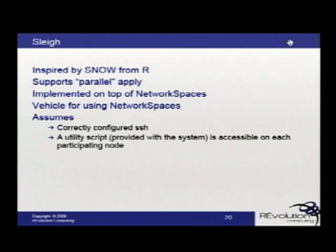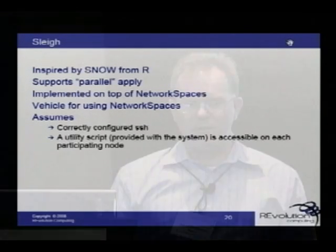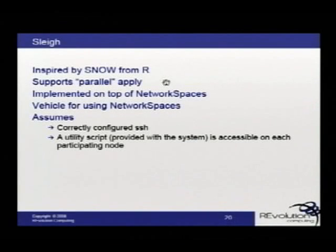How do you access this within R? We created a package called Network Spaces client for R. It uses something called slay, inspired by the SNOW package in R written by Luke Tierney, Michael Lee, and Tony Rossini. SNOW stands for Simple Network Of Workstations — it's a way of creating a parallel computing environment in R using various transport mechanisms such as MPI, sockets, and PVM. You can now create a Network Spaces client using SNOW, but we created something called slay, inspired by SNOW, which supports parallel apply as well as other types of parallel functions.